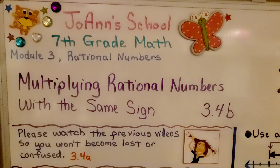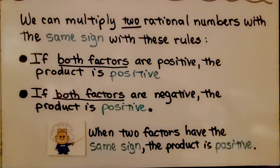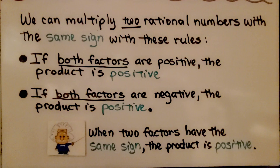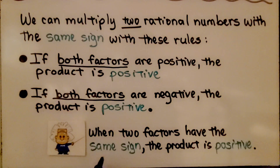We're at 3.4b, multiplying rational numbers with the same sign. We can multiply two rational numbers with the same sign using these rules: if both factors are positive, the product is positive; if both factors are negative, the product is positive. So when two factors have the same sign, the product is positive.